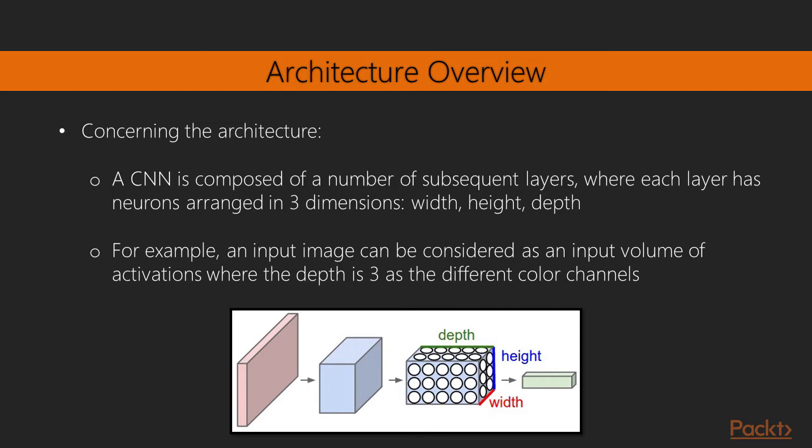Concerning the architecture, a CNN is still composed of a number of subsequent layers, but each layer has neurons arranged in three dimensions instead of only one: width, height, and depth. For example, an input image can be considered as an input volume of activations where the depth is three as the different color channels.